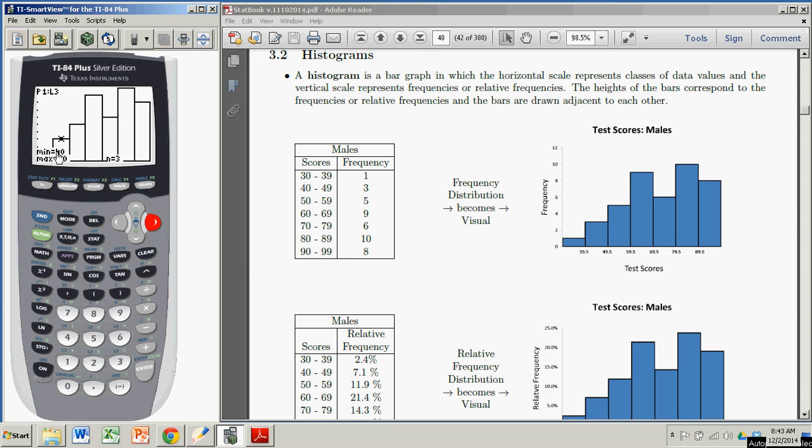If I move over, the class 40 to 50 has a frequency of 3. Move over another one—the class 50 to 60 has a frequency of 5. You can check out the classes and actual heights by tracing through this histogram. It's not as easy to read as a histogram with other software, but it certainly gets the information and you can see what the distribution looks like. That's it. That is making a histogram with the TI-83/84 graphing calculators. Bye.